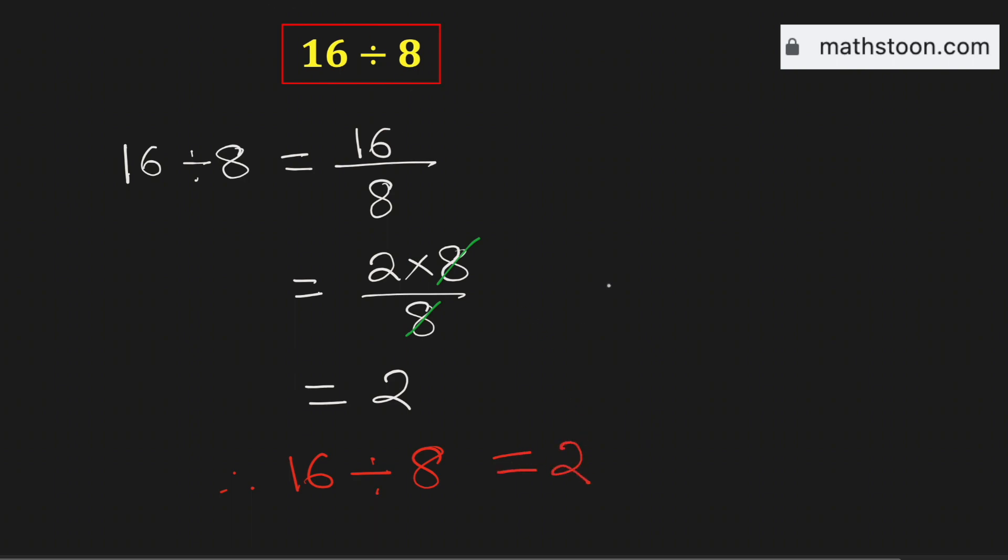Now we will do this using the long division method. We know that 8 goes into 16 by 2 times and if we subtract we will get 0.